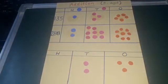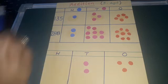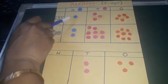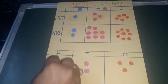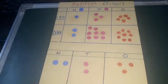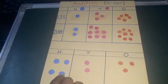And at last we'll add hundreds column. So count them. We have 1, 2, 3 and 4. So here comes 4 hundreds. 1, 2, 3 and 4.